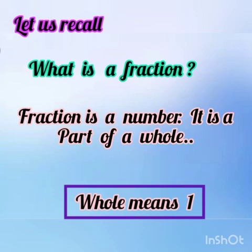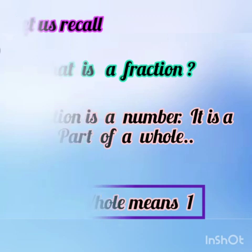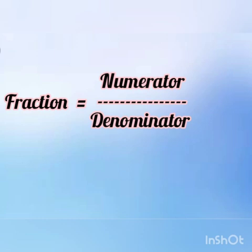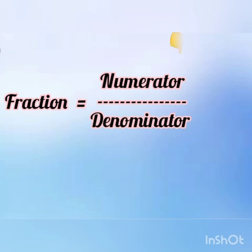A fraction consists of 2 numbers — that is, Numerator and Denominator. How do we write it? Fraction is equal to Numerator divided by Denominator. The number on the upside is the Numerator, and the number on the downside is the Denominator.